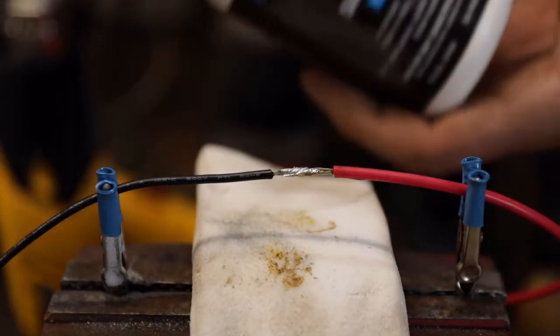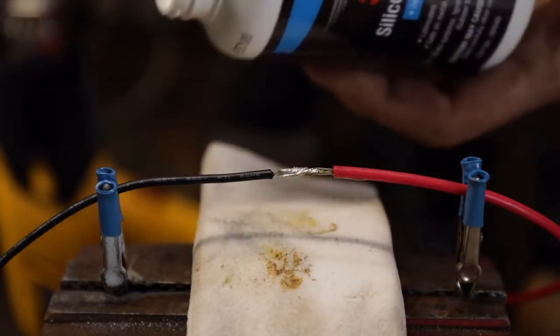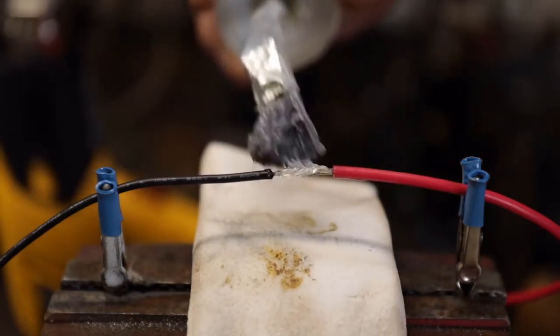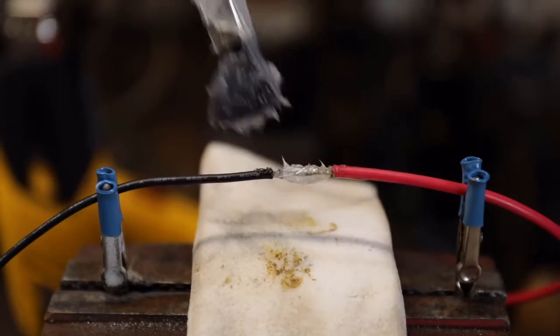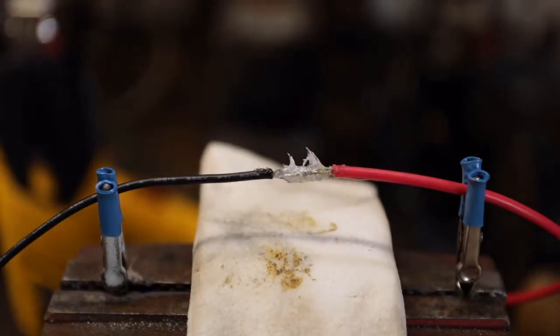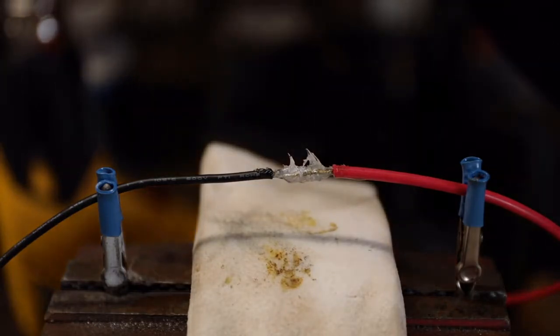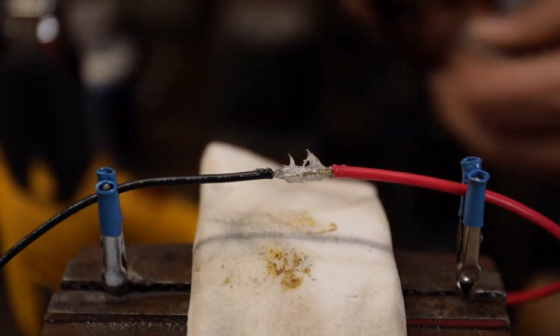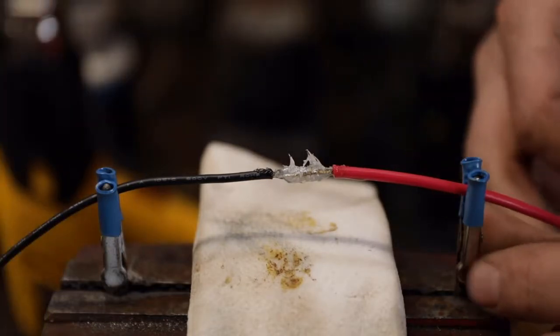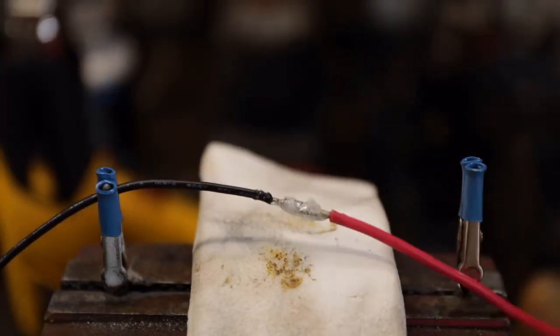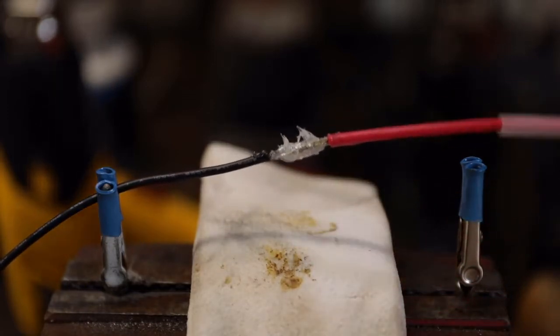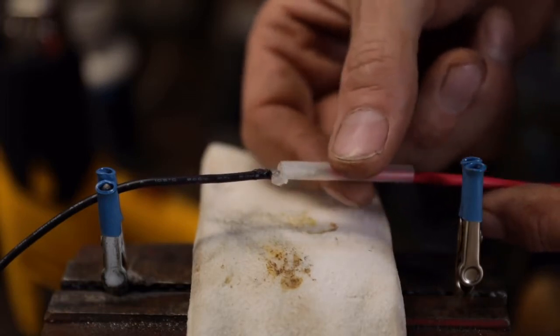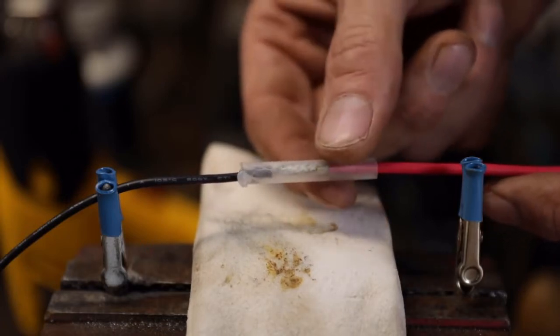Now we want to waterproof this. This is where we'll use the 3M silicone paste. Having this in your shop anytime you put together electrical connectors is so good. Put a little bit of that on there. Now I'm going to use a piece of clear shrink tubing so you can see what's going on. Thread the shrink tubing on and try to be careful not to scrape that silicone grease off.